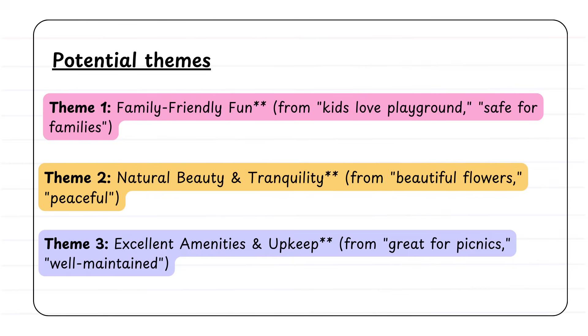From this, there are three potential themes that we could pull from. Theme one being maybe family-friendly fun. For example, they mentioned kids love the playground and it's safe for families. Theme two might be about natural beauty, for example, the discussion around beautiful flowers or it being peaceful. Theme three might be something around excellent amenities and the upkeep of the park. For example, it's great for picnics and it's well maintained.